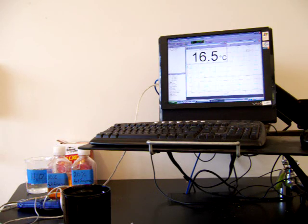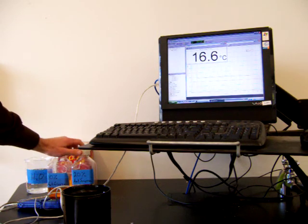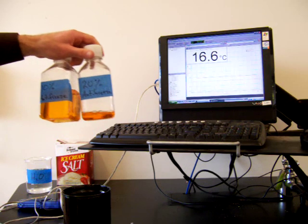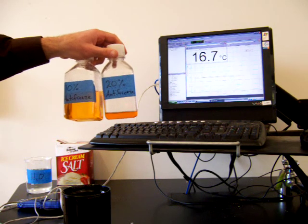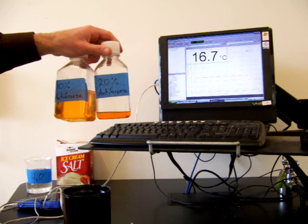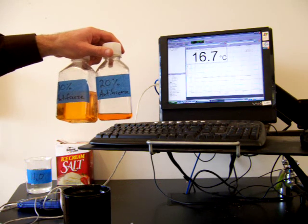This is the freezing point depression lab where we're going to try to determine the molar mass of antifreeze. I've got a couple of antifreeze solutions mixed up here. One is 10% antifreeze that was made by dissolving 10 grams of antifreeze in 90 grams of water.